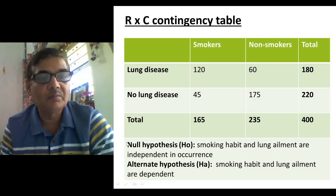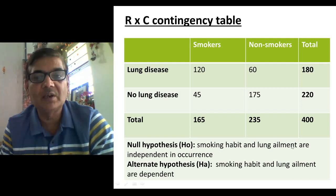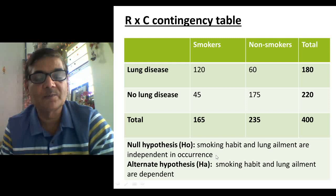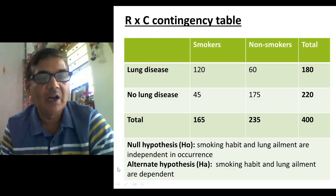If we want to test this, we develop a hypothesis called the null hypothesis. The null hypothesis states that there is no effect — that is, smoking habit and lung ailments are independent in occurrence. The alternate hypothesis will be that smoking habit and lung ailments are dependent. So initially, we develop the hypothesis.